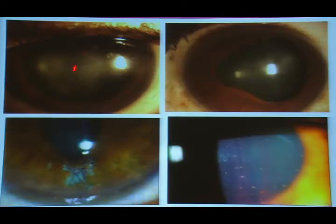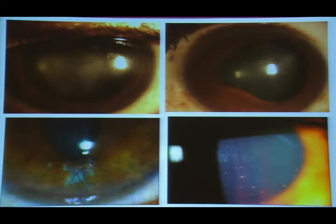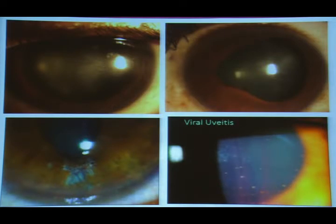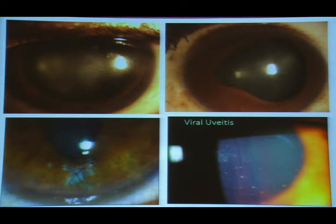Sometimes inflammation or KPs can be localized to a particular area on the cornea endothelium, which is very characteristic of herpetic viral uveitis. These patients usually have increased pigments on the keratic precipitates at the time of activity.